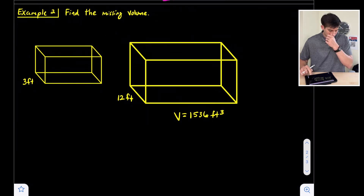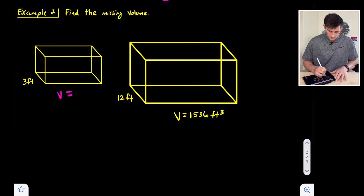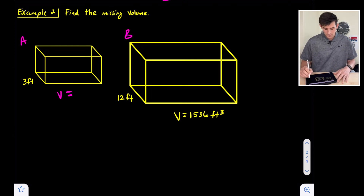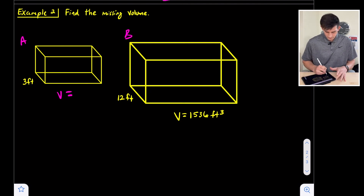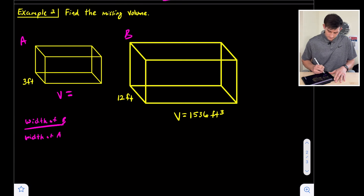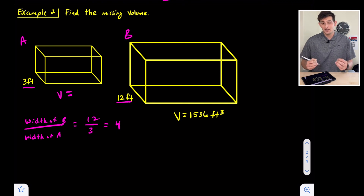Our second example: we have two rectangular prisms and we want to find the missing volume. We'll call the smaller prism A and the larger prism B. Let's find our scale factor using the width. The width of B divided by the width of A — the width of B is 12 feet and the width of A is 3 feet — giving us a scale factor, or K value, of 4.